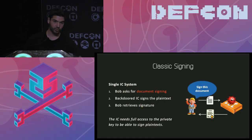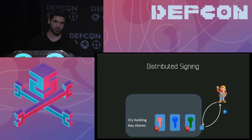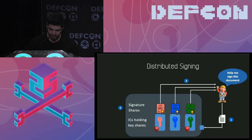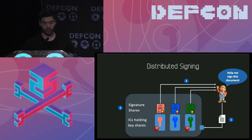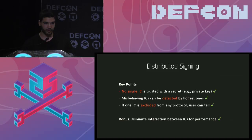For classic signing, you supply plaintext, say you want to sign it, the IC needs full access to your private key and returns the signature. Instead, we do distributed signing with a step zero: caching. When you set up the device, you do this once for thousands of signatures - it takes a few minutes and you do it only once. Then when you want to sign a document, you send it to the HSM, they generate signature shares which are returned to you, and you combine them to retrieve the signature. At no point does anyone learn the full private key.